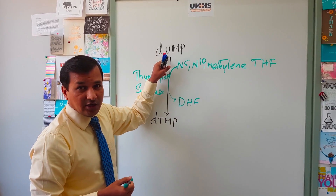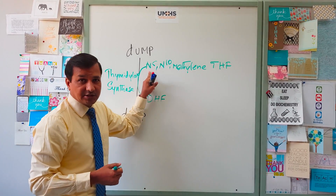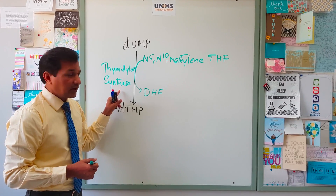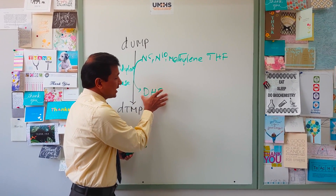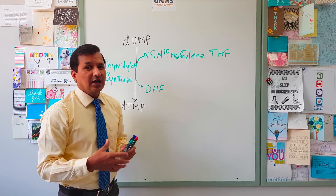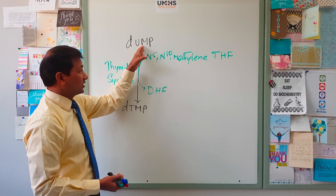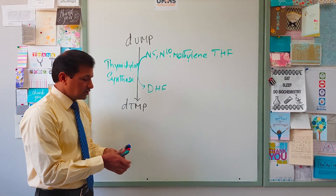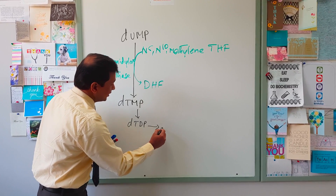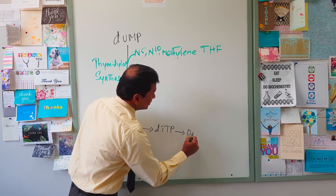Thymidylate synthase converts deoxyuridine monophosphate into deoxythymidine monophosphate with the help of N5,N10-methylene tetrahydrofolate, which is converted into dihydrofolate. The dihydrofolate released must be converted back into tetrahydrofolate, and then further into N5,N10-methylene tetrahydrofolate, allowing more dUMP to be converted into dTMP. The dTMP can then go to dTDP, then dTTP, which is used in DNA synthesis.